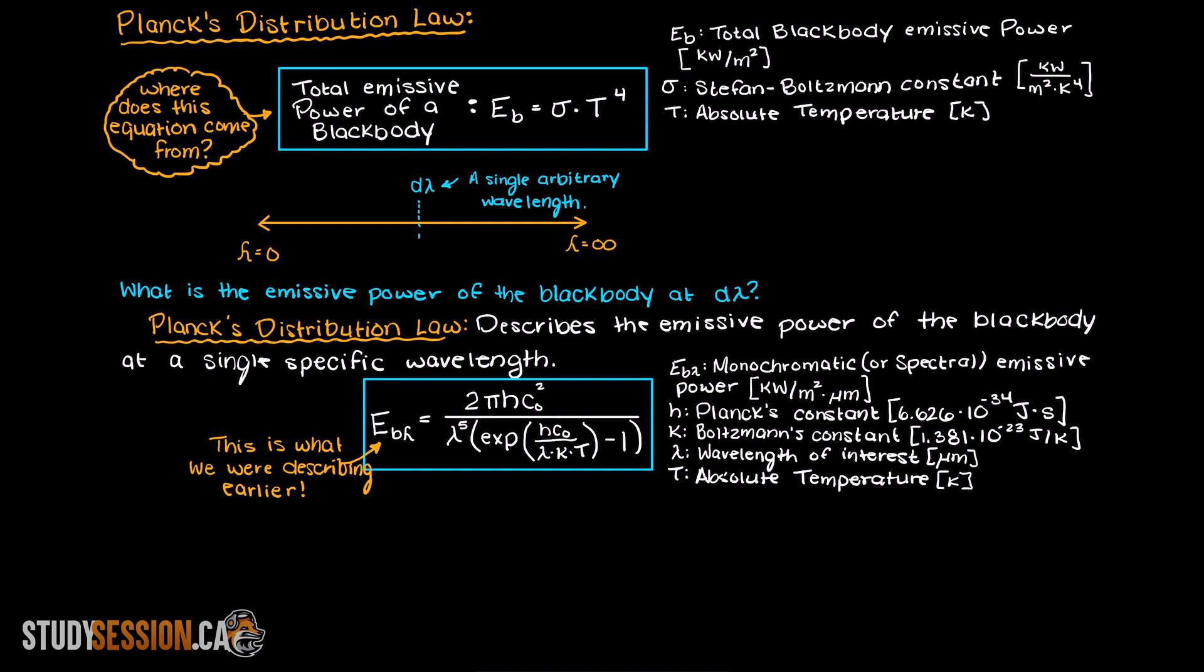or it can also be known as the spectral emissive power of the blackbody. This is what we were describing earlier. This is the emissive power of the blackbody at one single specific wavelength.